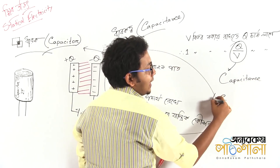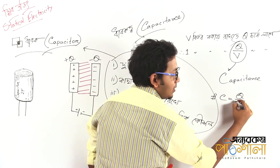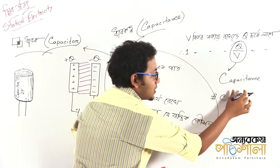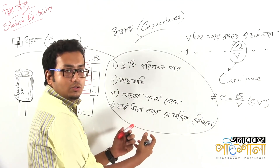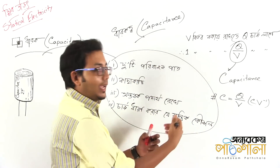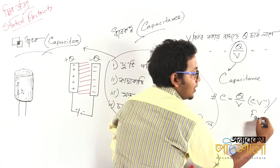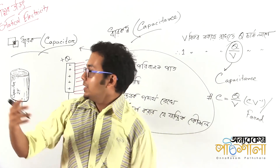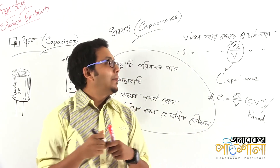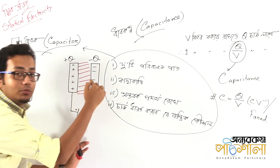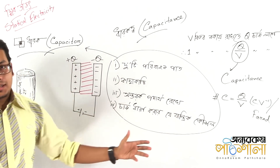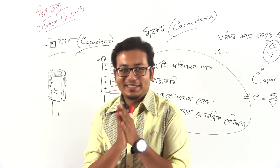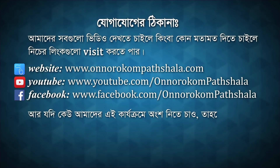[Non-English language segment] Capacitance is defined as coulombs per volt, also known as the Farad. This unit is named after Faraday and is used to measure the capacitance of a capacitor.